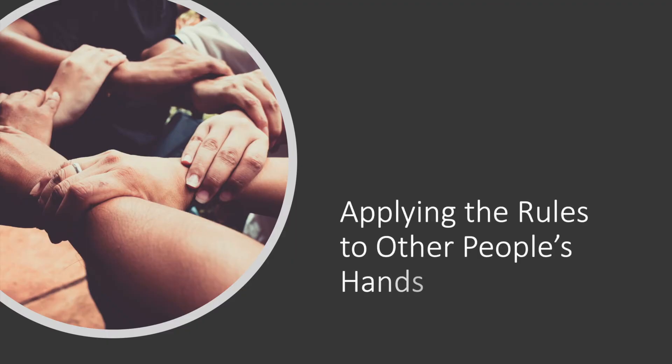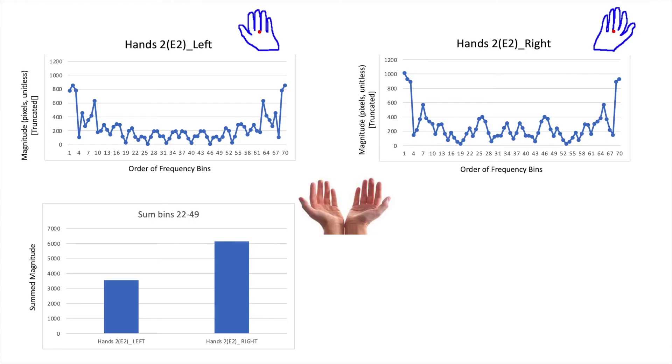To take a further step, we applied the rules to adult hands and babies hands just to prove that the rule still works. This is hands 2, which are a pair of larger hands. Let's see if my rules apply.